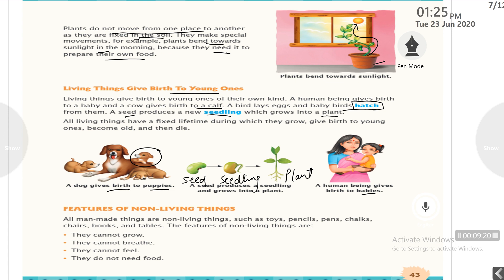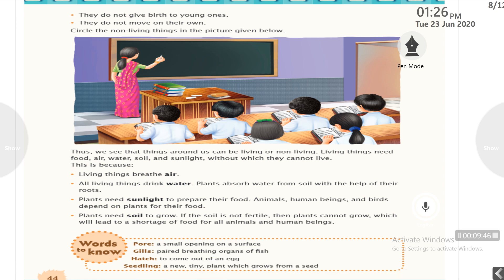Features of non-living things: all man-made things are non-living things such as toys, pencil, pen, chalks, chair, books, tables etc. Non-living things cannot grow, breathe, feel and do not need food. They do not move on their own. Examples around us include the duster, chalk, books, blackboard, door, and benches — these are all non-living things.